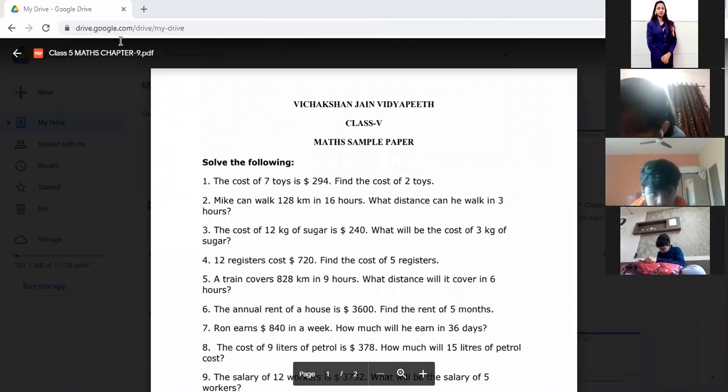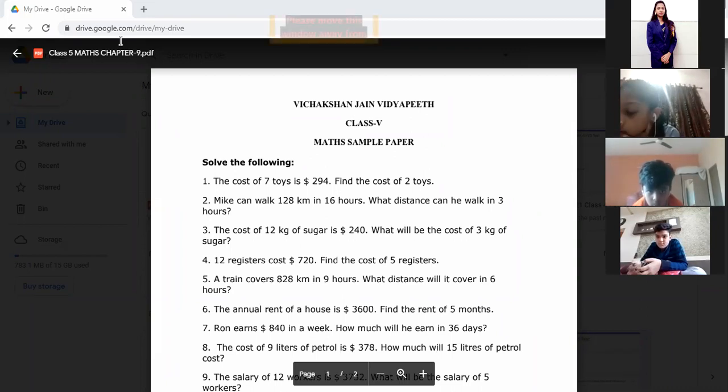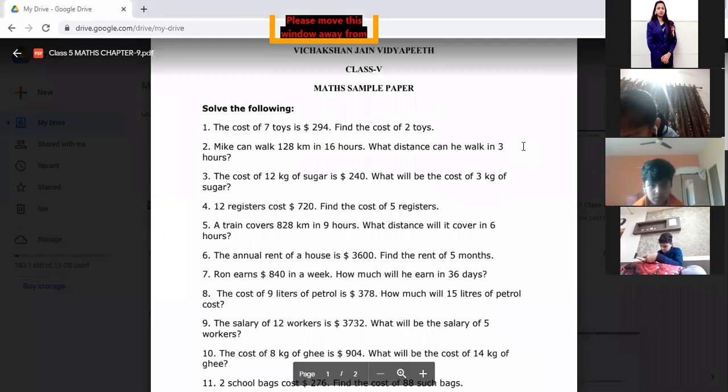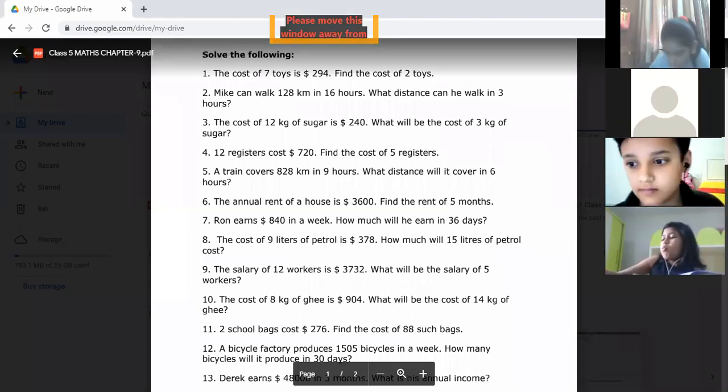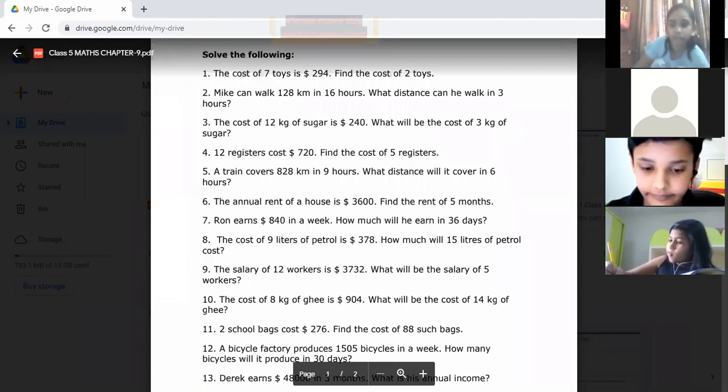Question number two: Mike can walk 128 km in 16 hours, what distance can he walk in 3 hours? For this, you need to know in one hour how much distance he is travelling. So 128 divided by 16, we will get answer how much distance he is travelling in one hour. Then multiply the answer with 3, you will get the answer. All questions are based on unitary method.